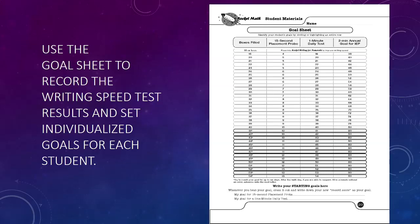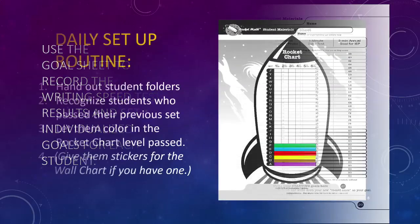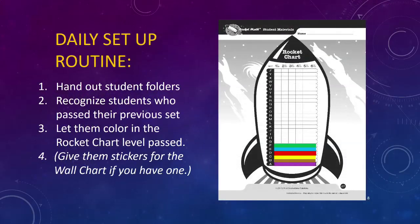Now you're ready to teach the daily routine to the students. Here's the daily setup routine. One, hand out student folders. Two, recognize students who passed their previous set. Three, let them color in the rocket chart for the level they passed. Four, give them stickers for the wall chart if you have one. Now you're ready for students to begin practicing.